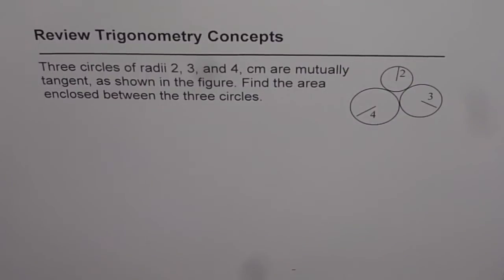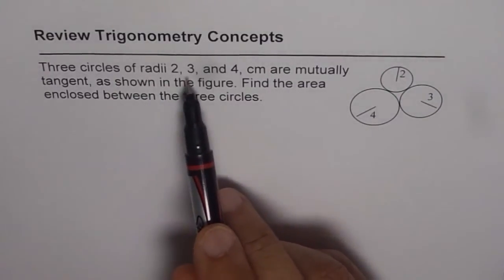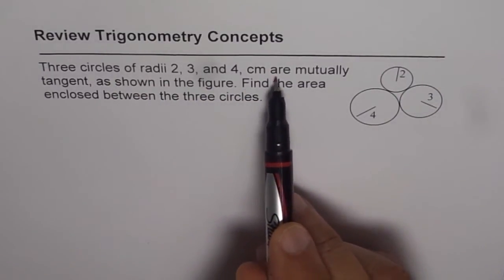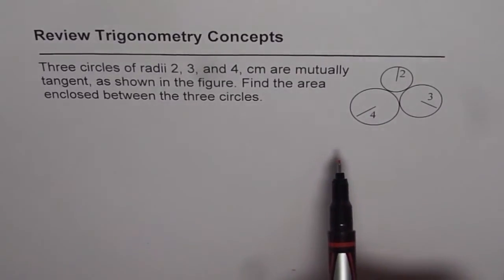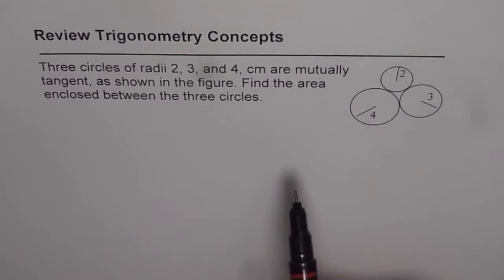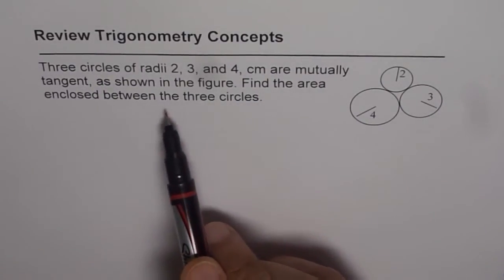Here is an excellent example to review some of the concepts which we have learned in trigonometry. The question is: three circles of radii 2, 3 and 4 cm are mutually tangent as shown in the figure. Find the area enclosed between the three circles.